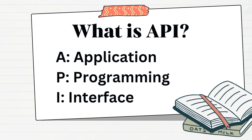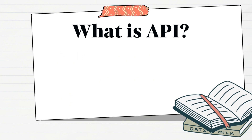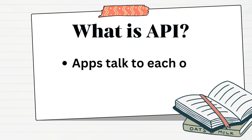Let us start with what is an API. API stands for Application Programming Interface. It allows different software applications to communicate with each other. It acts as an interface between different applications. Let us understand this with a very basic example.